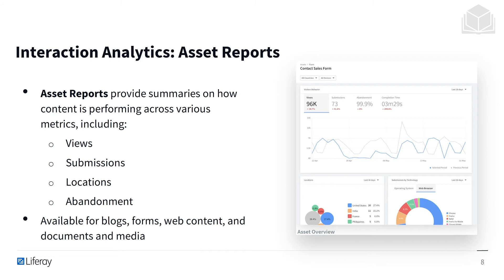Next we have interaction analytics, and we'll be understanding these through asset reports. They provide summaries on how content is performing across various metrics: views, submissions, locations, and abandonment. The great thing about Analytics Cloud is we're not just looking at sites or pages, but we're actually going to get down to the assets. So we can see this kind of data for specific blogs, forums, web content, as well as any other documents and media that we might be using.